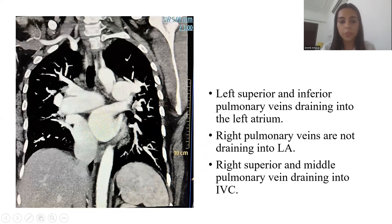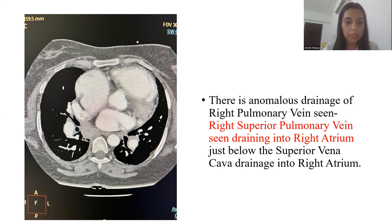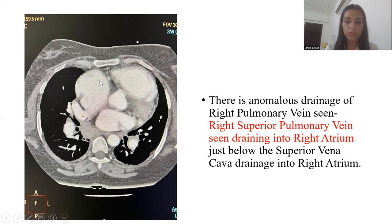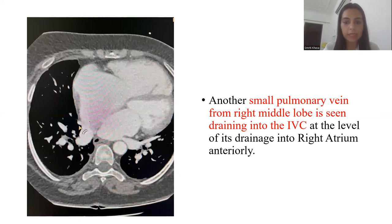Right pulmonary veins are not seen to be draining into the left atrium. Right superior and middle pulmonary veins are seen draining into the inferior vena cava. In this image, we see that there is anomalous drainage of the right pulmonary vein — the right superior pulmonary vein is seen draining into the right atrium, just below the superior vena cava. Another small pulmonary vein from the right middle lobe is seen draining into the inferior vena cava at the level of its drainage into the right atrium.